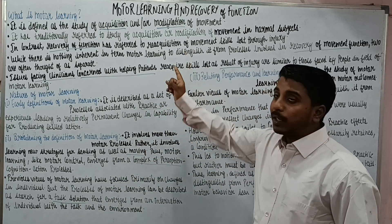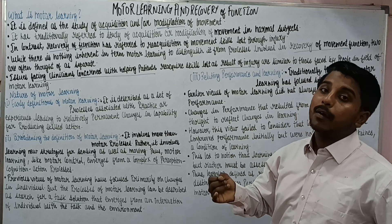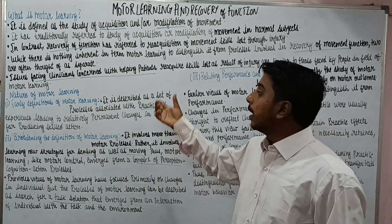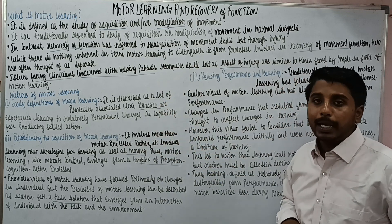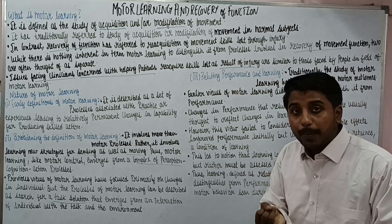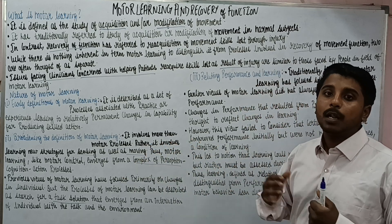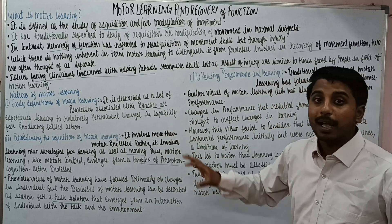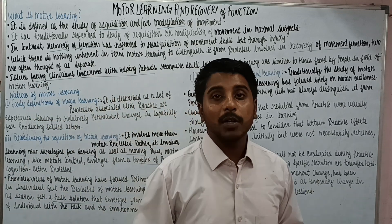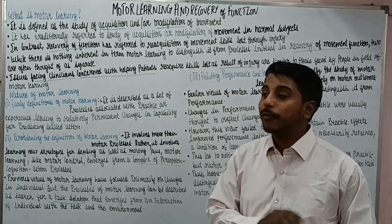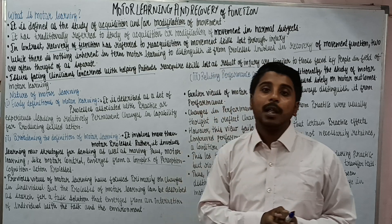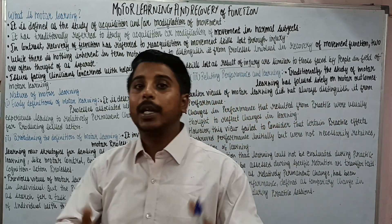To summarize today's lecture: we studied that motor learning is the process by which we acquire or modify a skill. We studied the nature of motor learning — the earlier definition was purely based on the motor part with no importance given to perception, cognition, and action. The broadening of the definition brought in that complex. Finally, we distinguished between performance and motor learning. In our next lecture, we will study the further part of the nature of motor learning, followed by theories of motor learning. Thank you to one and all.